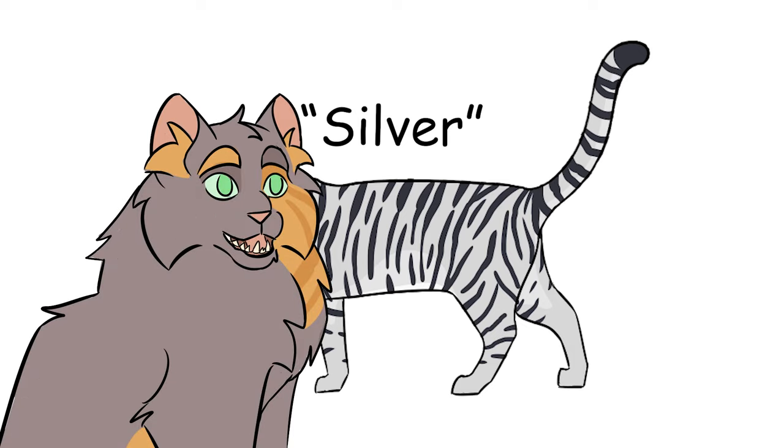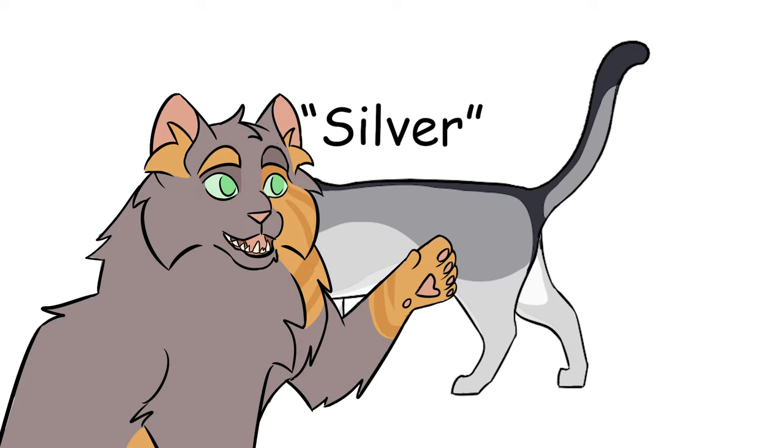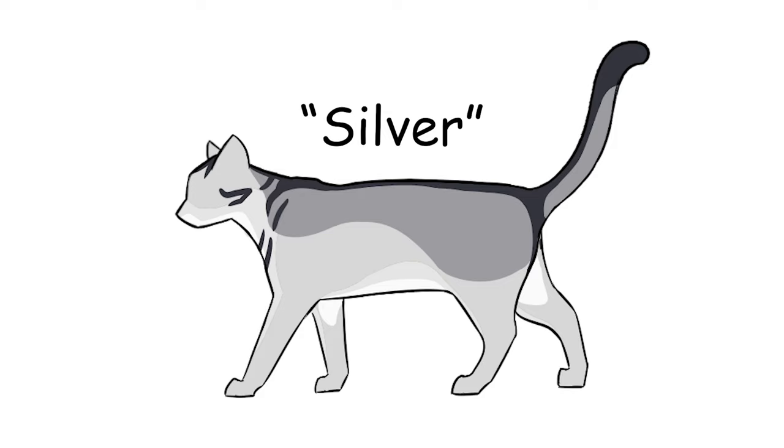What about tick tabbies, who are basically all agouti hair? Well, same thing. The agouti hairs get their banding silvered, and the result is a silvery cat, and whatever traces of stripes remain are still the normal, true color.